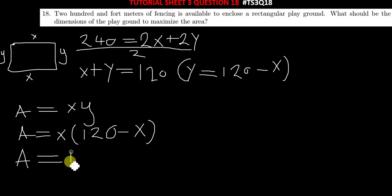The area will now be equal to 120x minus x squared. They are asking what should be the dimensions of the playground to maximize the area. To maximize the area, we can first find the value of x.